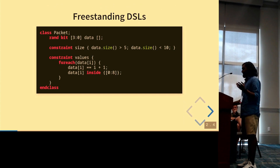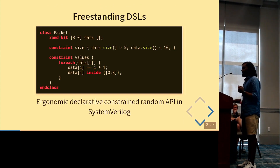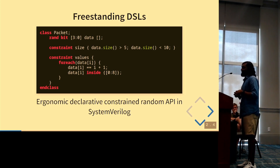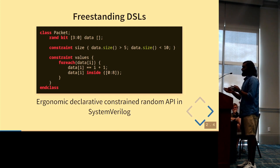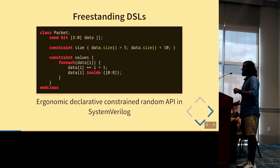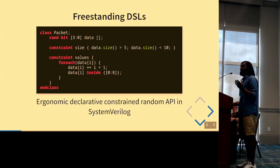Here's another example: the SystemVerilog constrained random API. The nice thing here is you have a very ergonomic declarative constrained random API that lets you describe what you want. You can use combinators like inside, call size on a list, and you have special bits data types that are very easy to define. So freestanding DSLs are great from this perspective.